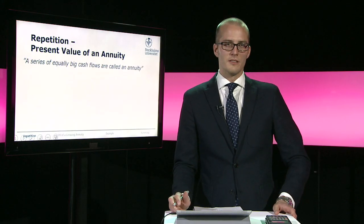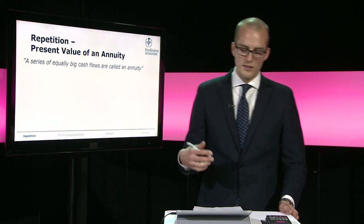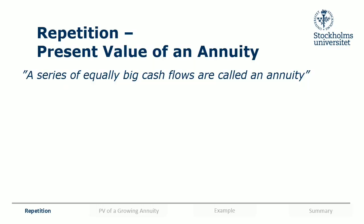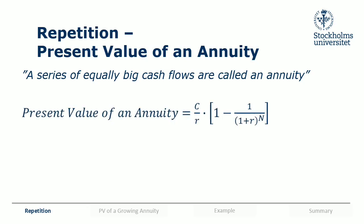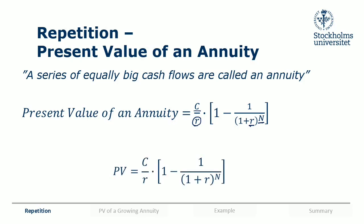Last time we talked about the present value of an annuity. A series of equally big cash flows is called an annuity, and we can calculate its present value by taking one cash flow, dividing by the discount rate, and multiplying with the factor (1 minus 1 divided by (1+R)^N), where N is the amount of cash flows in the annuity.